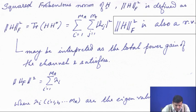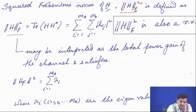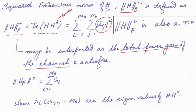An important quantity to define is the squared Frobenius norm of H, denoted ‖H‖_F², which will be used throughout the next part of the analysis. It is defined as the trace of H·H^Hermitian, which means you are essentially summing all the squared magnitudes of the elements together. This can be interpreted as the total power gain of the channel. The Frobenius norm squared is also equal to the sum of eigenvalues of H·H^Hermitian, where those eigenvalues are the squares of the singular values of H.